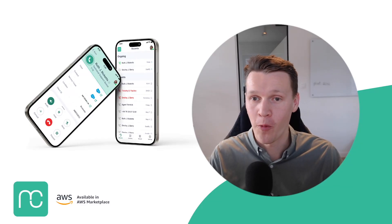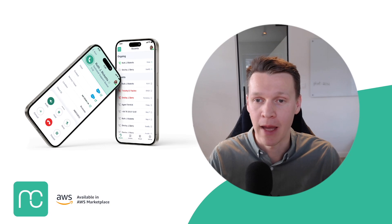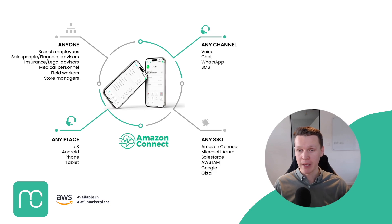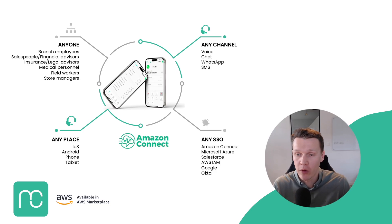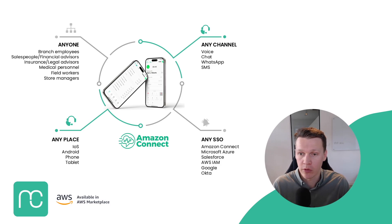Hello everyone and welcome to the demo video of Mobile Connect, the mobile app for Amazon Connect. Mobile Connect is a native mobile app for iOS and Android that allows you to handle all Amazon Connect interactions on your mobile device or even on your tablet.